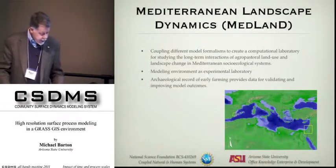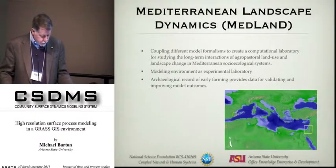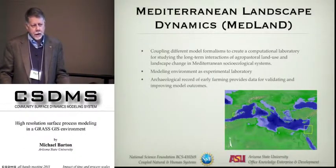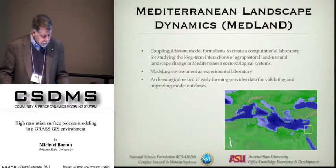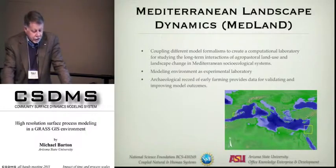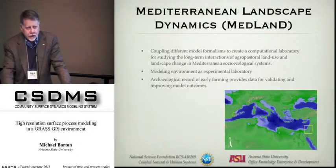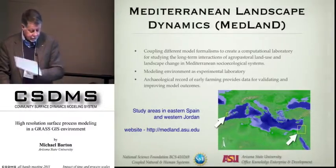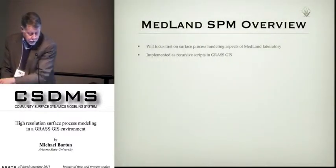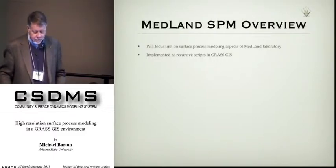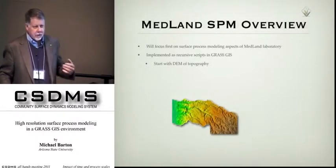What I want to do now is turn to how we've used coupled GRASS GIS and other modeling platforms to create a computational modeling laboratory for studying the long-term interactions of agri-pastoral land use and landscapes. We've focused in the Mediterranean. This is an NSF-supported project with high-resolution study areas at opposite ends of the Mediterranean. As an overview, how we're dealing with surface process modeling is that we start with a DEM of topography.